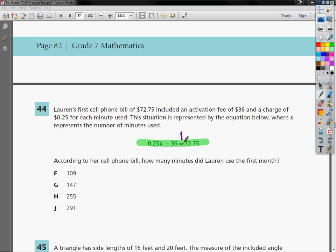First step of course is just to draw your line. And then in this case I have a variable term, or a number with a variable, and then a constant term, which would be a number by itself, equal to another number.